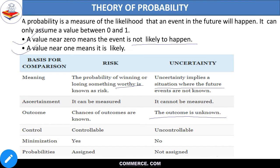Risk — because we can measure it, we can also minimize it. But uncertainty — we can't measure it, we can't minimize it. And for probability, risk mein probability rules apply hote hai.